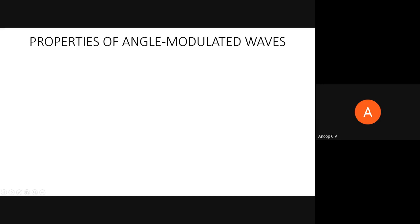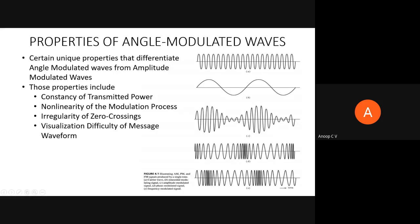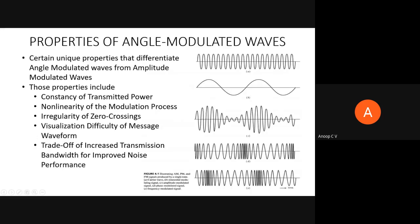The five properties we have seen are: constancy of transmitted power, non-linearity of the modulation process, irregularity of zero crossings, visualization difficulty of the message waveform, and the trade-off of increased transmission bandwidth for improved noise performance. We should have a clear idea of these properties. Now we'll take them one by one and inspect.